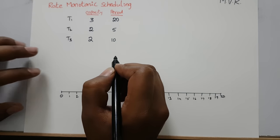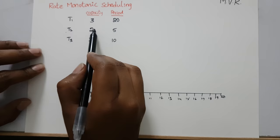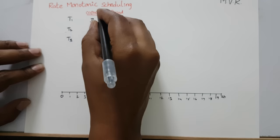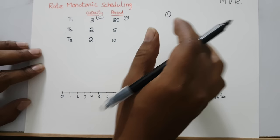Now let's start the Rate Monotonic Scheduling algorithm. Here there are three processes: T1, T2, and T3. Their capacities are given as 3, 2, and 2, and their periods are 20, 5, and 10. Capacity is indicated by C and period is indicated by P. The first point is: how much time do we need to schedule this algorithm?